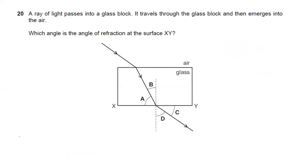Question twenty: a ray of light passes into a glass block, travels through it, and emerges into air. What is the angle of refraction at surface X? The angle of refraction is always measured with respect to the normal. With respect to the normal at surface X, the angle is D. Answer D is the right choice.